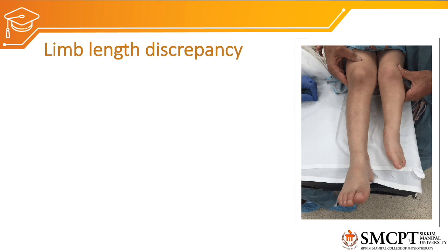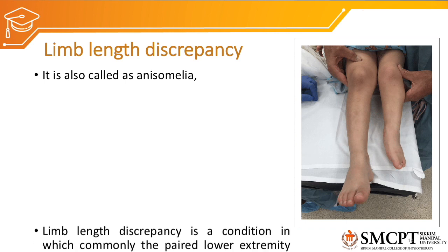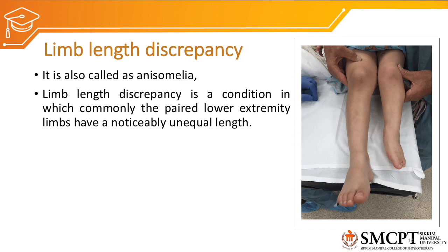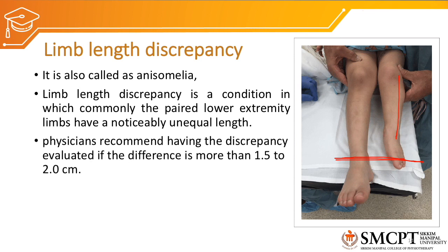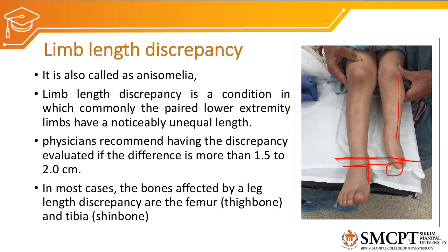Now we'll discuss how to measure the lower limb length. Before understanding how to measure lower limb length, we must understand limb length discrepancy, also called anisomelia. Limb length discrepancy is a condition in which the paired lower extremity limbs have a noticeably unequal length — one limb is shorter than the other. If a physician finds more than 1.5 to 2 centimeters of difference between two limbs, further evaluation and correction of the discrepancy is recommended. The bones most commonly affected are the femur (thigh bone) and the tibia (shin bone).